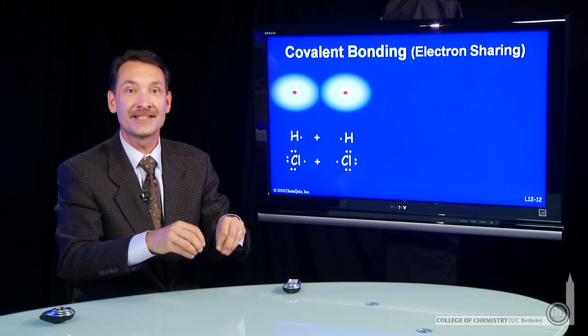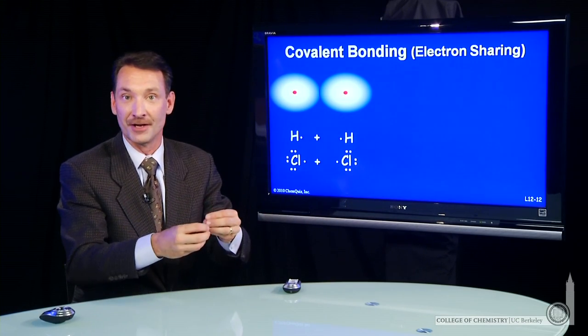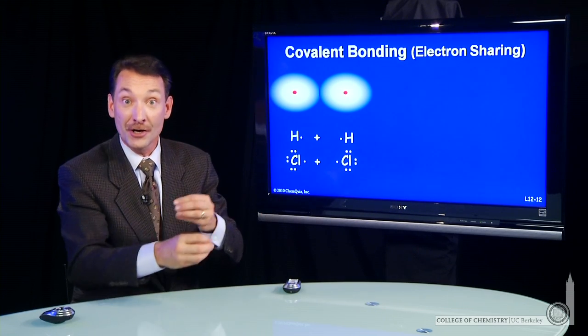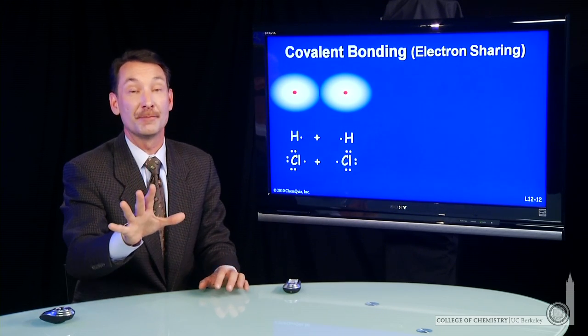Another way to form bonds and fill octets is to share the electrons rather than to transfer them from one element to another. If I share electrons to fill octets, that's called covalent bonding.